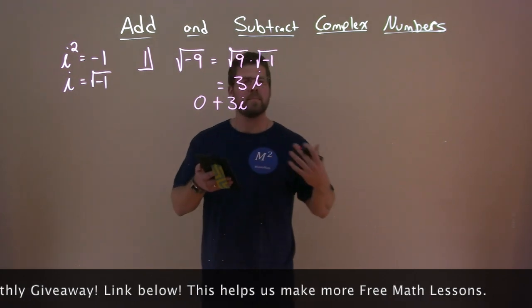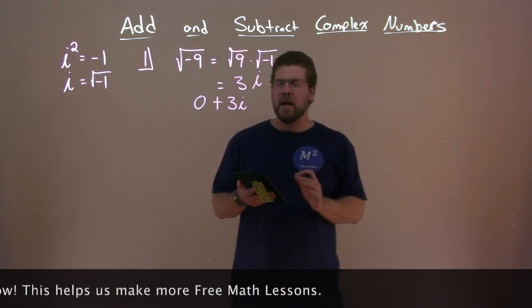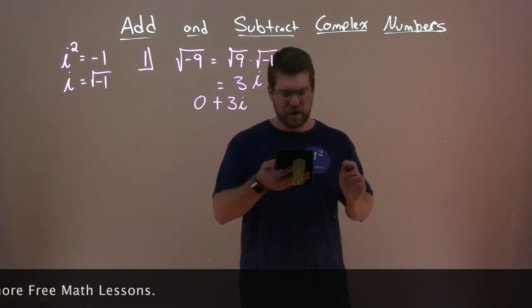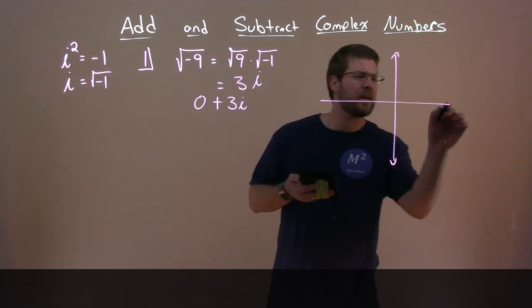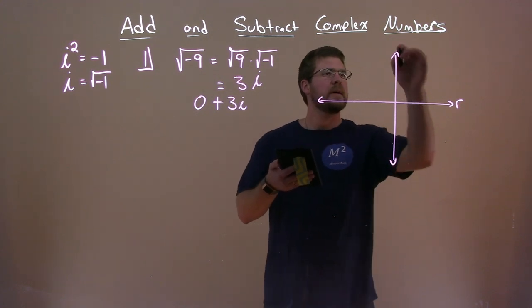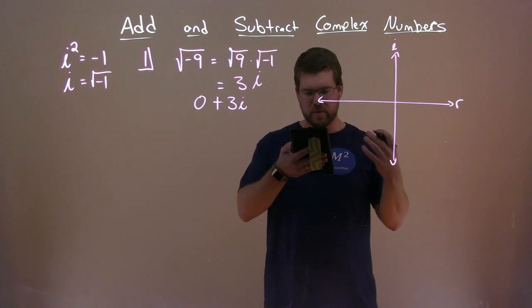Now, what about plotting points? If we have numbers, should we be able to plot them? Well, we have what we call the complex plane. So if I make a little, almost just looks like a Cartesian plane. And what we have here is our real numbers for the x-axis and the y-axis is going to be our imaginary numbers.